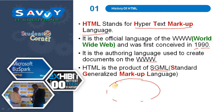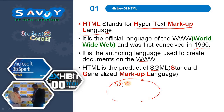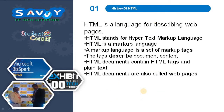Tim Berners-Lee suggested HTML. HTML is a subset of SGML. HTML is the language used for describing web pages. HTML is a markup language, and a markup language is a set of markup tags. The tags describe document content. HTML documents contain HTML tags and plain text. HTML documents are also called web pages.